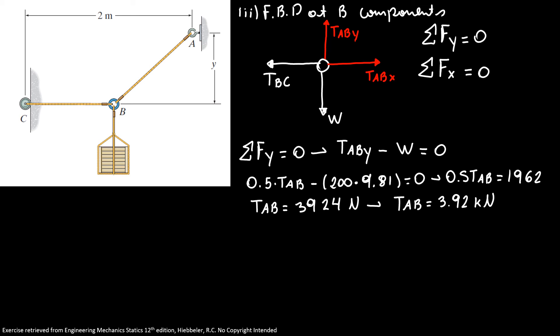Now I can do the sum of forces in X component equals zero. I have tension AB in X direction minus tension BC equals zero. I know my tension AB is 0.866 times tension AB, which has to equal my tension BC.